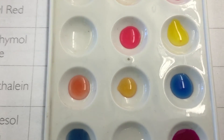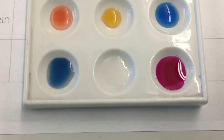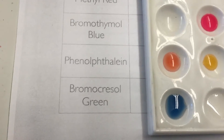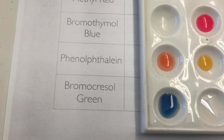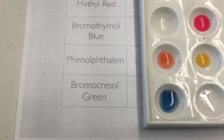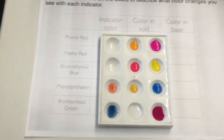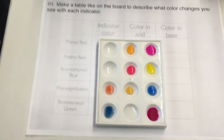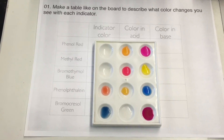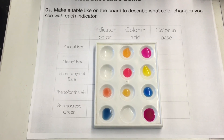So to recap: phenol red, methyl red, bromothymol blue, phenolphthalein, and bromocresol green. If you have any questions make sure you ask tomorrow, but that's basically it for our acid-base demo.